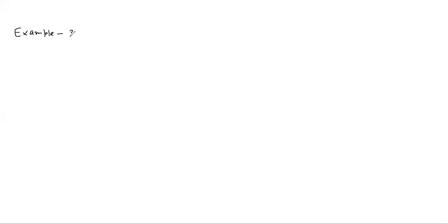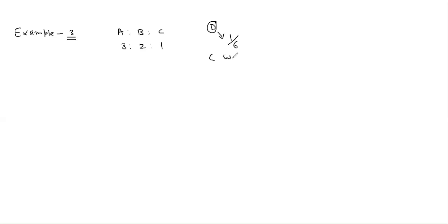New ratio and sacrificing ratio in case of admission of a partner — Example 3. Suppose there are three partners A, B, C sharing profit and losses in 3:2:1. They admit D as a new partner for 1/6 share in the profits. C will get his original share.